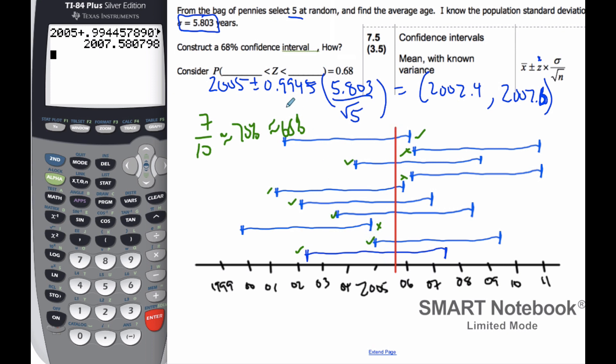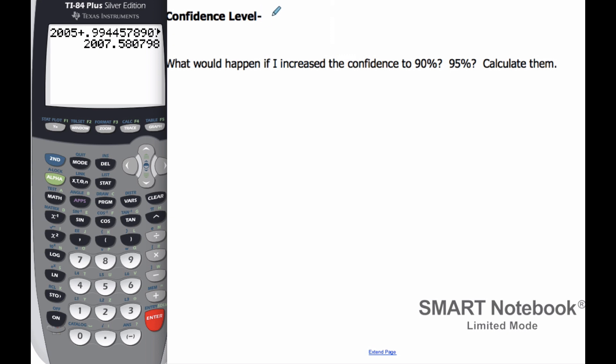So when you create a confidence interval, you never know whether the true mean mu is inside the interval or not. But you are confident with the method 68% of the time, or maybe it's 90% of the time depending upon what your confidence level is. And that's what this level means. It is a confidence in the procedure.